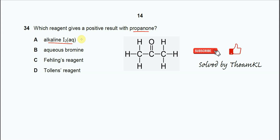When alkaline iodine reacts with a methyl ketone, it will form iodoform, CHI3. In propanol, we know that it has a methyl ketone. This methyl ketone will give a yellow precipitate.